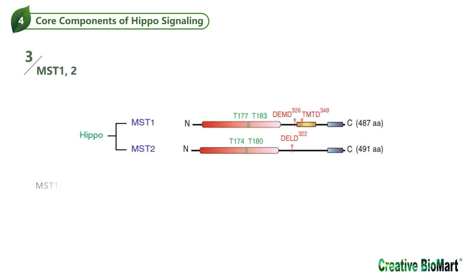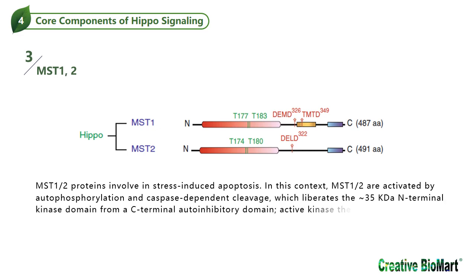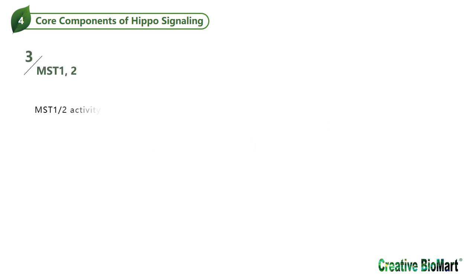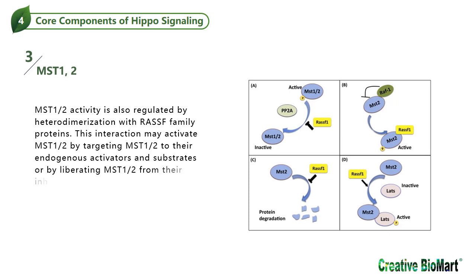MST1 and MST2 proteins are involved in stress-induced apoptosis. In this context, MST1 and MST2 are activated by autophosphorylation and caspase-dependent cleavage, which liberates the N-terminal kinase domain from a C-terminal autoinhibitory domain. The active kinase then translocates to the nucleus and promotes apoptosis by phosphorylating relevant substrates, such as histone H2B. MST1 and MST2 activity is also regulated by heterodimerization with RAS family proteins, which may activate MST1 and MST2 by targeting them to their endogenous activators and substrates, or by liberating them from their inhibitors.